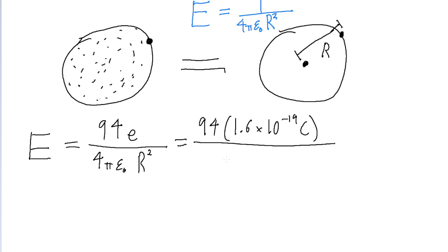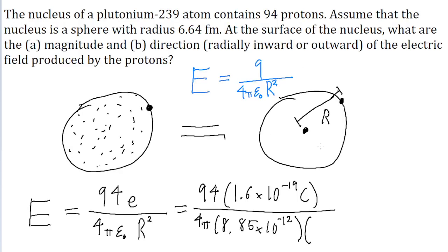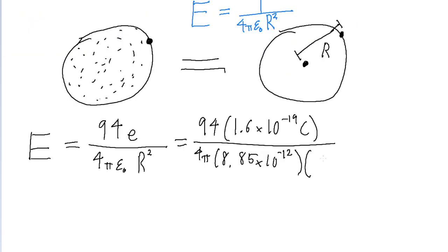divided by 4π × 8.85 × 10⁻¹² (with all its crazy units), multiplied by the square of the radius which is 6.64 femtometers, or 6.64 × 10⁻¹⁵ meters squared.